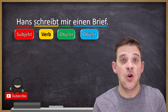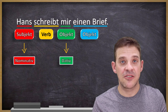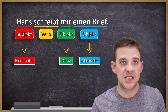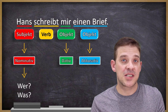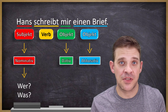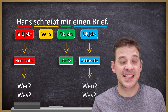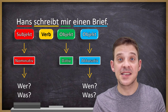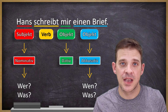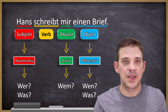Now we have a complete sentence with a subject, verb, and two objects. The subject is always nominative, and the objects are either dative or accusative. To determine these cases we can ask questions. For the subject: 'wer' (who) or 'was' (what) — who or what is doing something? For the accusative object: 'wen oder was' — who do you see or what do you buy? For dative: 'wem' — also 'who' but in the dative case.